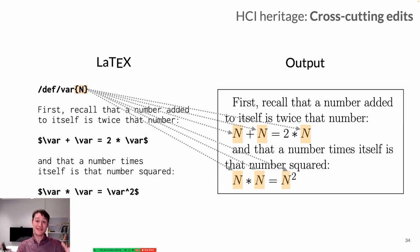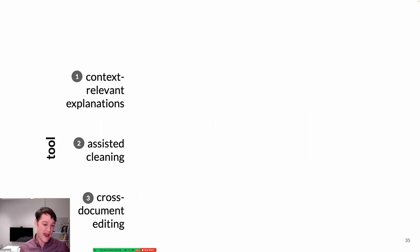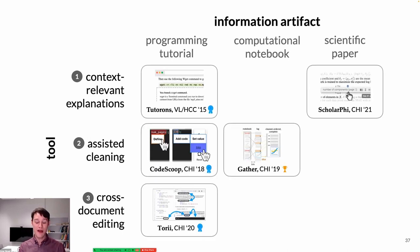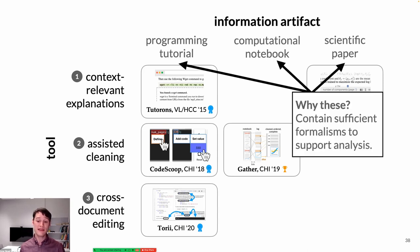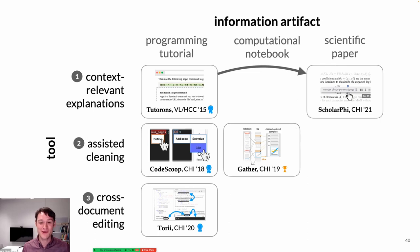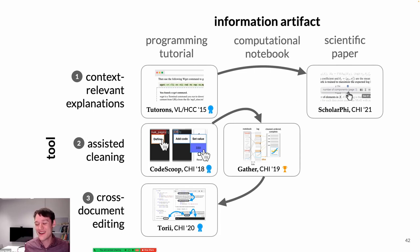None of these basic affordances is new. But in our work, we consider how we can provide effective context-relevant explanations, aids for assisted cleaning and cross-document editing — particularly in a contemporary set of technical media that we think deserves a lot of attention: programming tutorials, computational notebooks, and scientific papers. We've explored a lot of different projects in this space, focused on these media because not only are they widely used today, but they also contain sufficient formalisms so you can analyze them and provide power tools for authoring and reading. Furthermore, one of the things I really enjoy about this line of work is that oftentimes exploration in one area ends up leading to findings in another — some of our initial exploration within programming tutorials led us to explore affordances in scientific papers, and tools developed in programming tutorials were incorporated into computational notebooks.